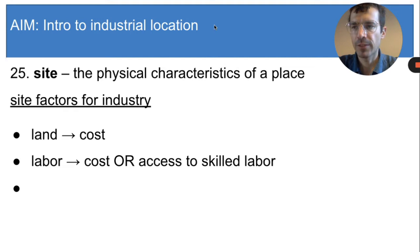The next site factor is labor, and that can refer to one of two things depending on whether or not the industry needs unskilled or skilled labor. Unskilled labor means that the work does not require any special knowledge and that pretty much anyone can do it. If that's the case, business owners are more interested in the cost of labor, and they would like the labor to be as cheap as possible so that they save money.